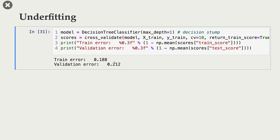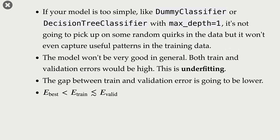When our model is too simple — like a dummy classifier or a decision tree with max depth 1 — the model is not going to pick up on random quirks in the data, but it also won't capture useful patterns. What we want is to find the mapping function that relates X to y and apply it on new unseen examples. If we can't capture useful patterns in the training data, the model won't perform well on unseen examples. This scenario — where both train and validation errors are high — is called underfitting.